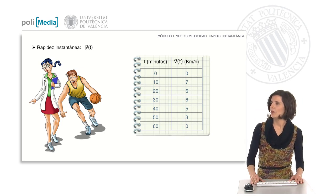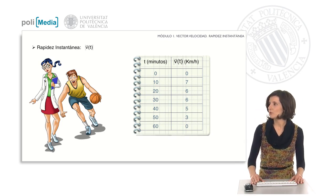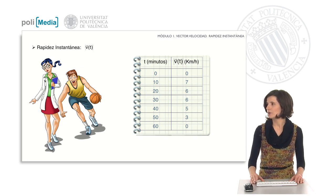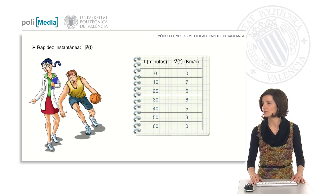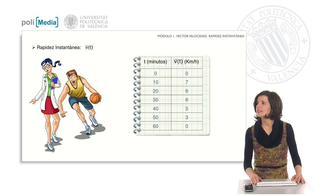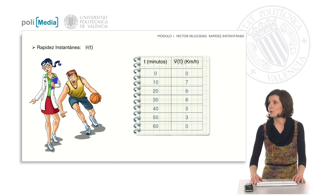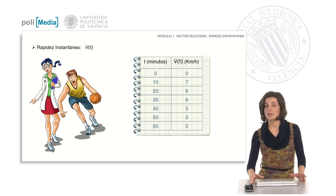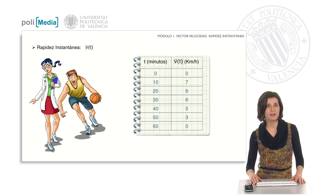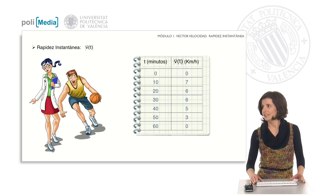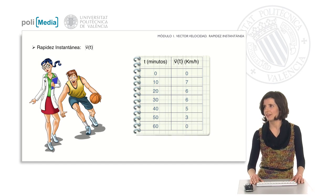Then, in the twentieth and thirtieth minutes, the speed was 6 kilometers per hour. They went a bit slower: at the forty-minute mark the speed was 5 kilometers per hour, and in the fiftieth minute the speed was 3 kilometers per hour. Finally, they arrived at the pavilion and stopped, so the speed returned to zero.